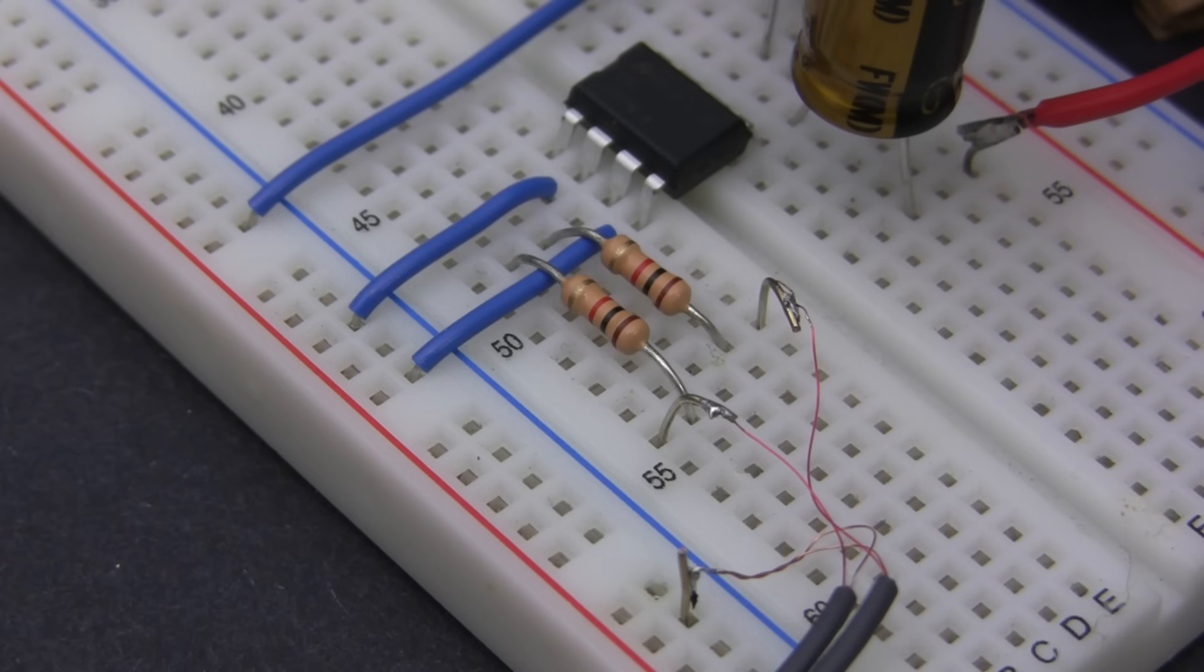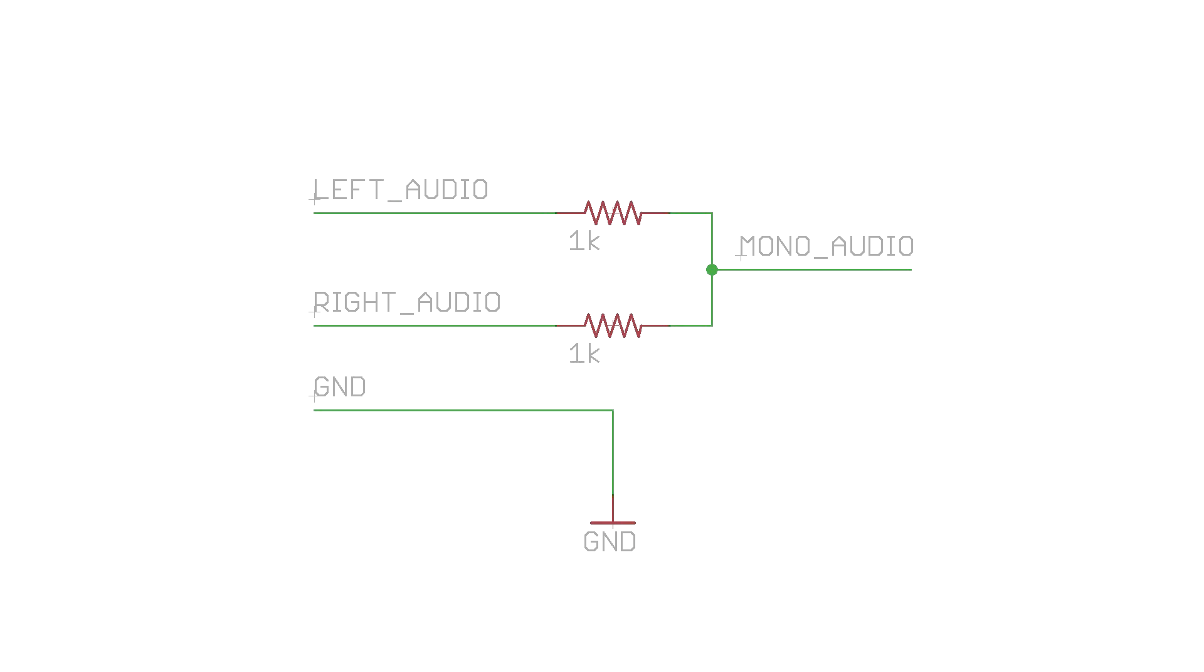Next, we're going to implement the simplest possible stereo to mono conversion circuit. It's just putting 1kohm resistors in series with the audio channels, then joining the ends together. Now this is definitely not the best way to do stereo to mono, as we're just averaging the signals here, but the point of this project is to create the simplest amplifier possible, and this trick works surprisingly well.